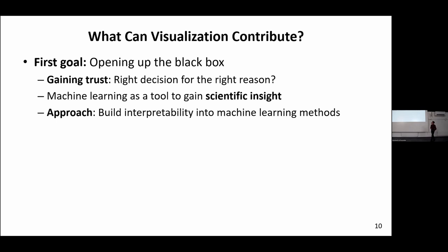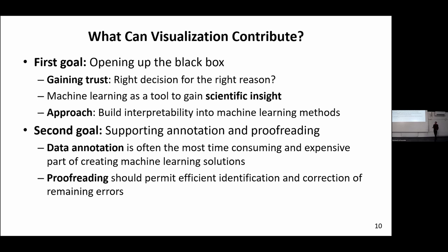There's a second goal: whenever you create these methods in practice, one big hurdle is you need lots of annotated data. For medical image segmentation, you need people to manually segment a large number of images — a very time-consuming and expensive process. Maybe visualization can help with annotation and proofreading. What if you want to close the remaining five percent — you have a method that works 95% of the time — how do we find and fix the remaining failure cases?